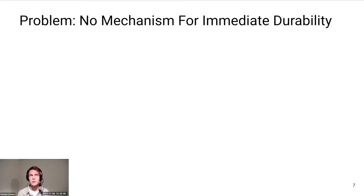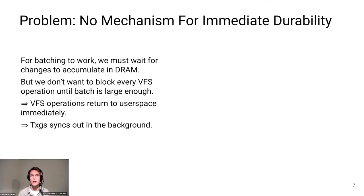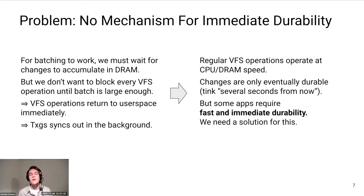However, with transaction groups we have a new problem: to make the batching work, we must wait for changes to accumulate in DRAM, but it's not reasonable to block every VFS operation until the batch is large enough. So we let the VFS operation return to user space immediately and the TXG is written out in the background. The advantage is that all VFS operations now operate at CPU or DRAM speed, but the downside is that the change will only be durable eventually, with no hard guarantee on when or whether that will happen, or in what ordering. Some apps — like databases — need a mechanism for fast and immediate durability.